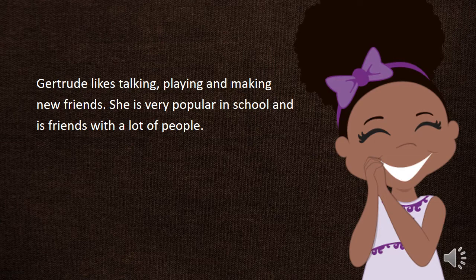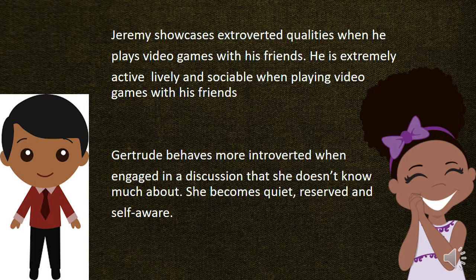Introverts don't always showcase their typical introverted qualities. In some cases, introverts find themselves displaying characteristics typical of extroverts, like when Jeremy and his friends play video games — Jeremy is exceptionally expressive. People looking from the outside in would think that Jeremy was an extrovert. This happens to extroverts as well, and Gertrude behaves in a more introverted way when engaged in a discussion she doesn't know much about. Hans Eysenck, in trying to explain Jung's theory, proposed that external factors and experiences influence a person's personality and alter their behavior. In a situation where introverts find themselves more comfortable, they tend to showcase more extroverted qualities, and the same goes for extroverts showcasing introverted qualities.